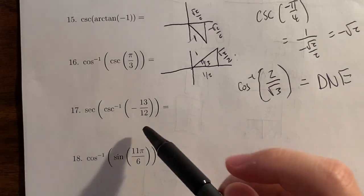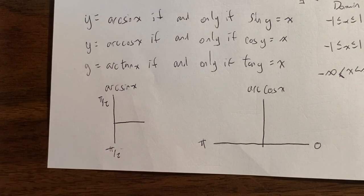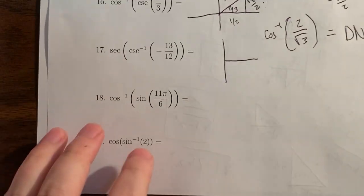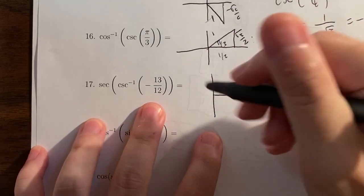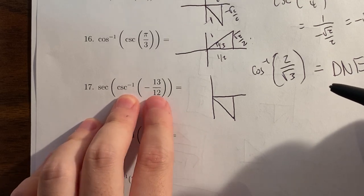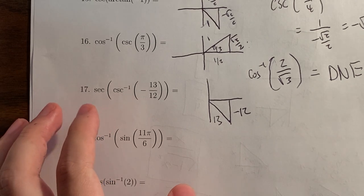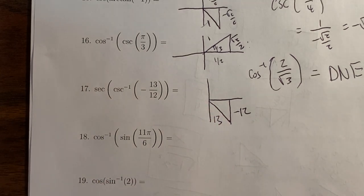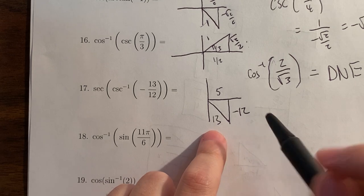For sec(arccsc(-13/12)): the inverse is on the inside. Inverse cosecant works the same as sine, so we deal with the same two quadrants. Since the value is negative, the angle is in the fourth quadrant. Cosecant is hypotenuse over opposite: 13 over negative 12. We need the third side; using the Pythagorean theorem and recognizing the 5-12-13 special triangle, the adjacent side is 5. Secant is hypotenuse over adjacent: 13 over 5. The answer is 13/5.